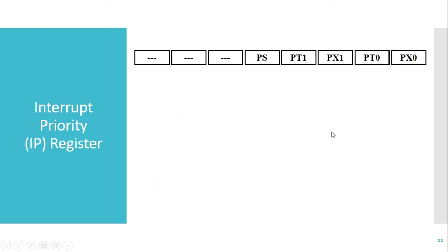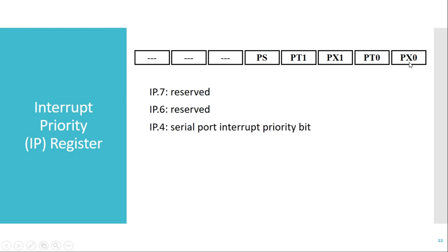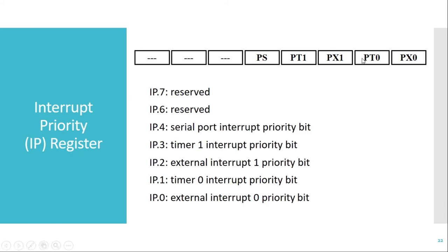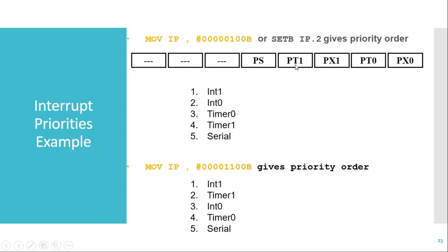The IP SFR format has bits related to individual interrupts. The LSB bit is related to external interrupt 0, the next bit is related to timer 0 overflow, then external interrupt 1, then timer 1 overflow, and then serial communication. Whenever we want to change the priority, we set a particular bit to 1 so that interrupt will have the highest priority.